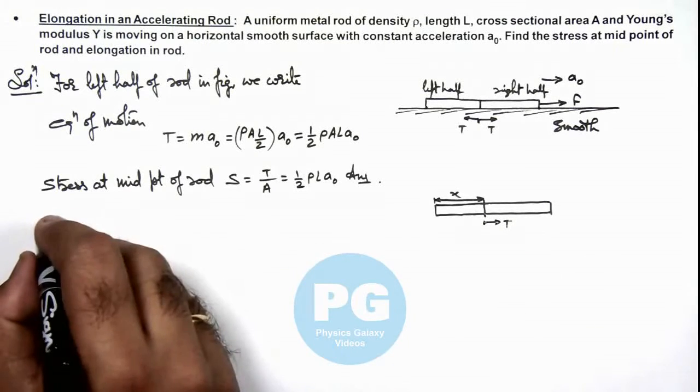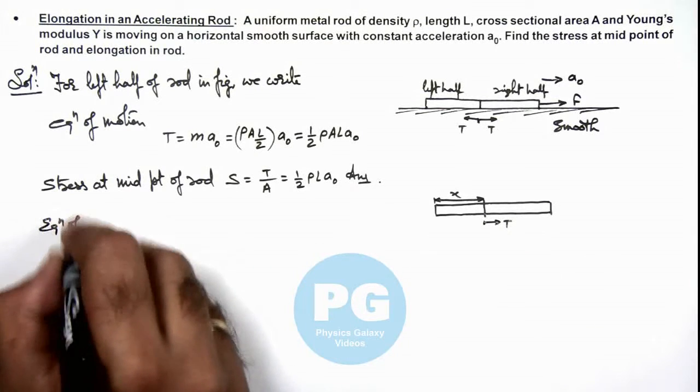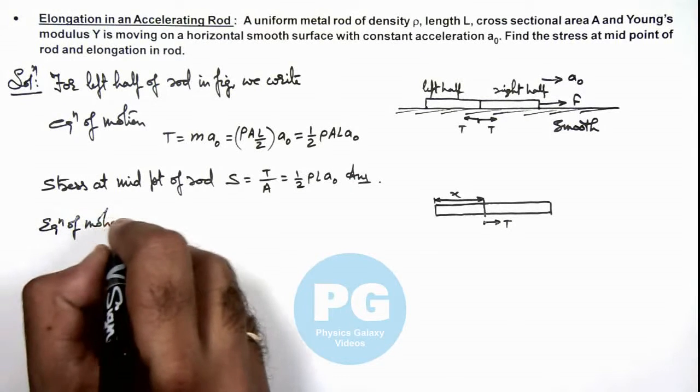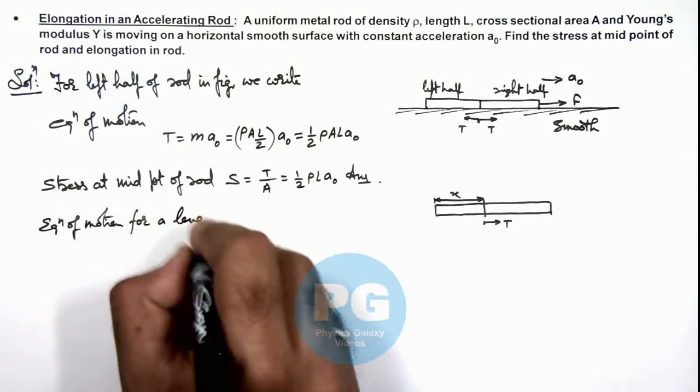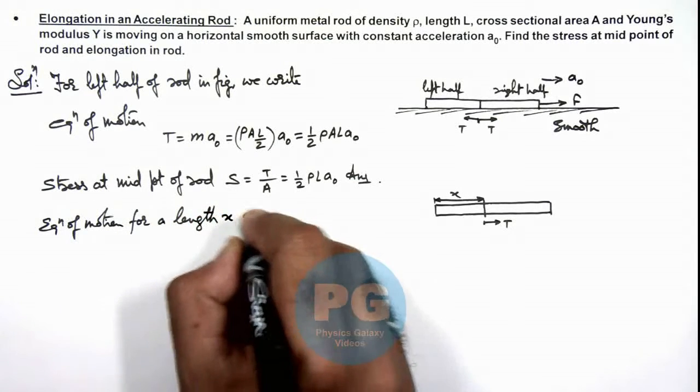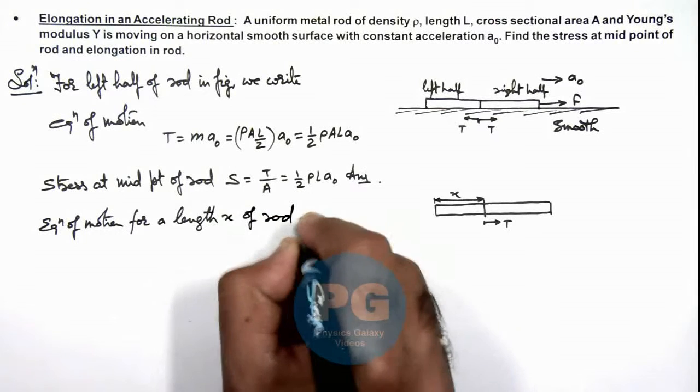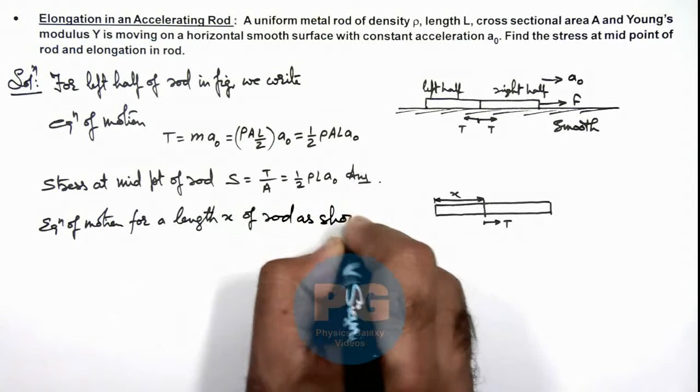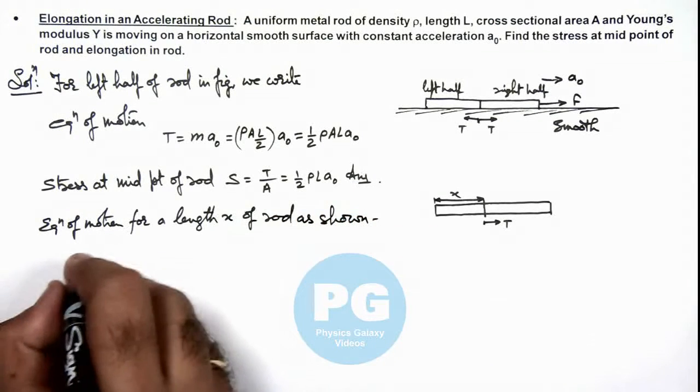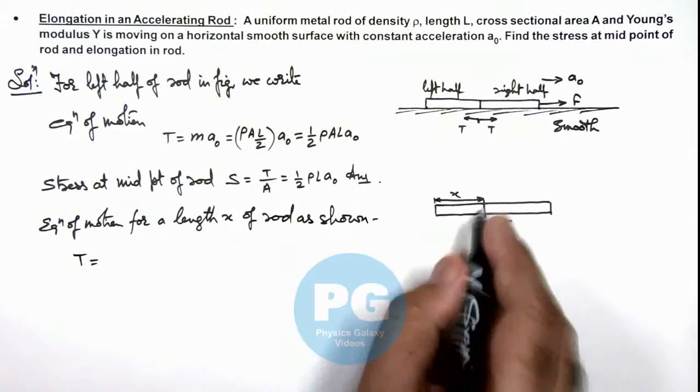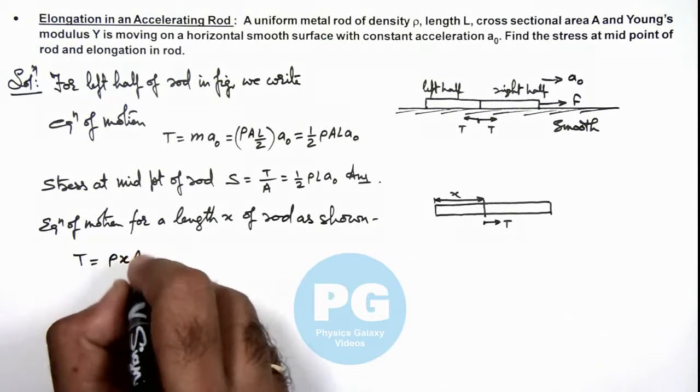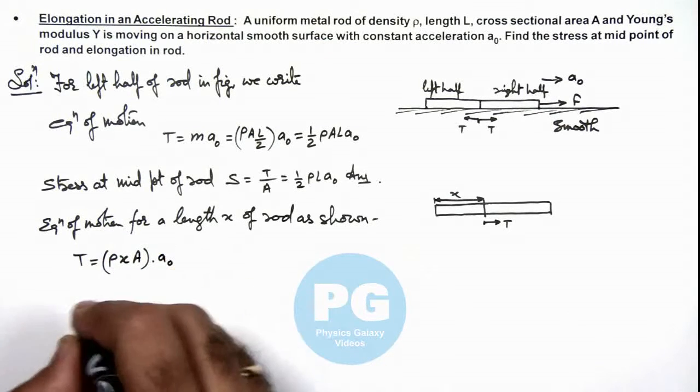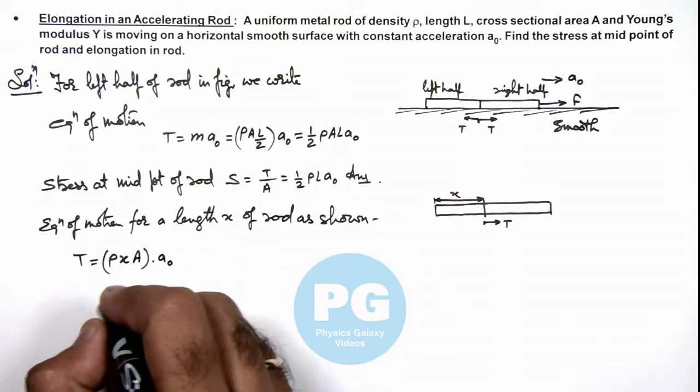We can write the equation of motion for a length x of rod as shown. Here we can write T should be equal to its mass, which is density multiplied by x multiplied by A multiplied by a₀. This should be the tension.